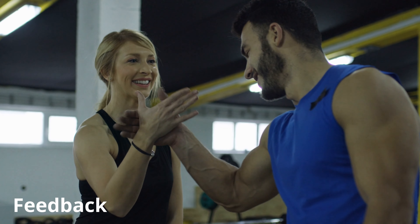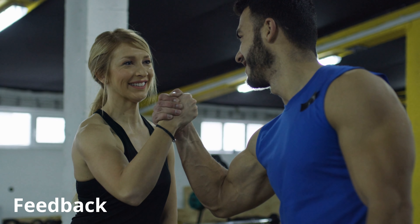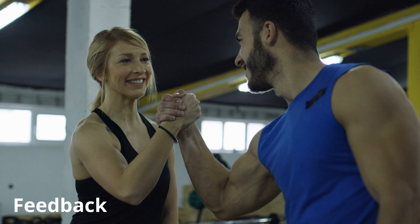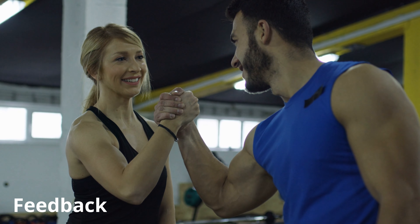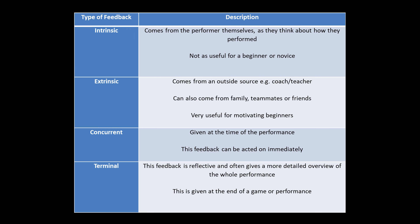Feedback is information that performers receive about their performance, and it can be gathered and used in different ways. There are four types of feedback that we need to understand, and these include intrinsic feedback, extrinsic feedback, concurrent feedback and terminal feedback.